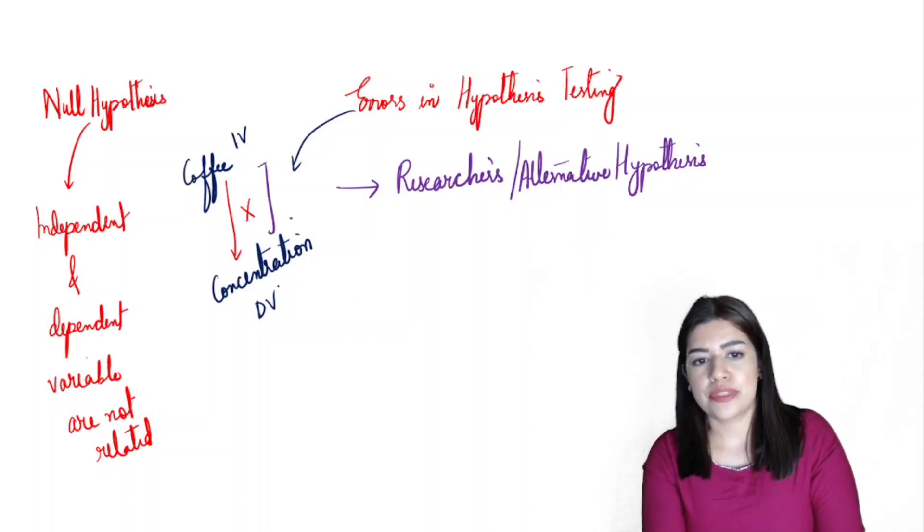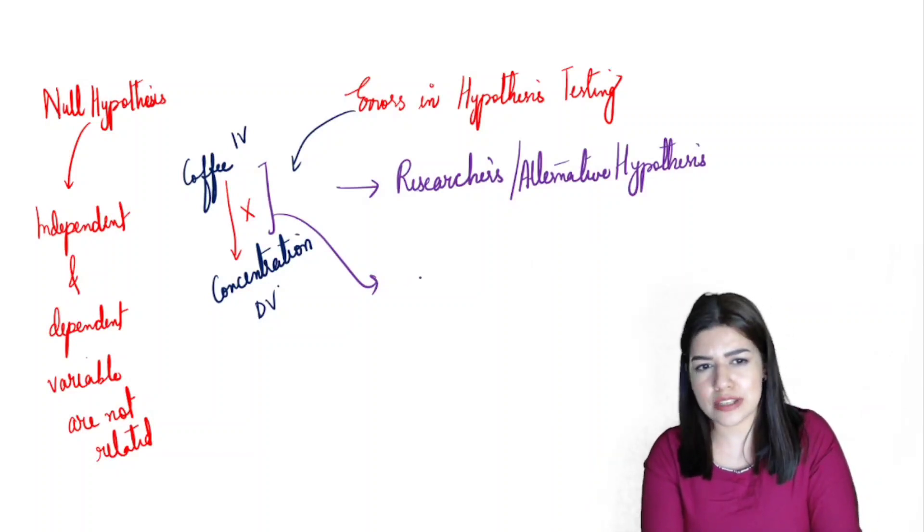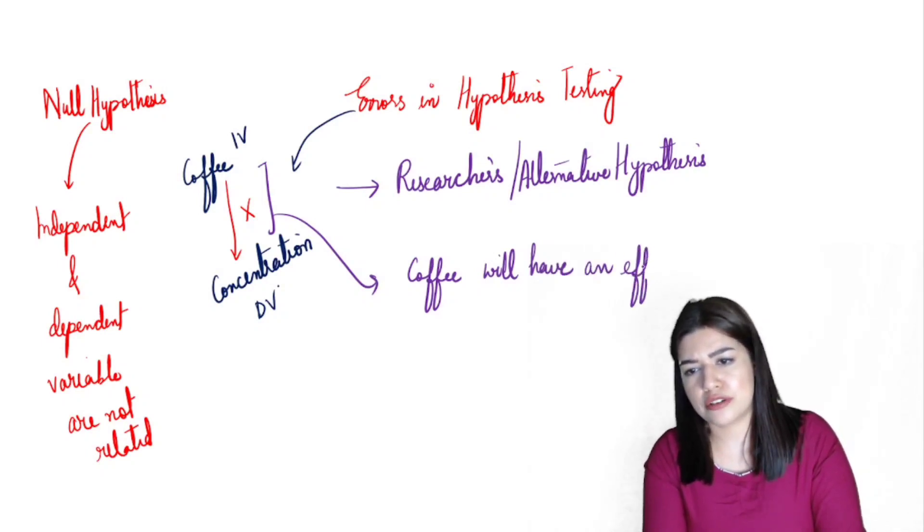The alternative hypothesis is basically going to propose that there is a relationship between the independent and the dependent variable. I would like to see that coffee has a positive effect on concentration. That would be a one-tailed hypothesis. I can also have a non-directional hypothesis where I simply say that coffee will have an effect, positive or negative, on concentration levels.